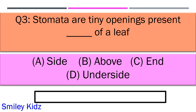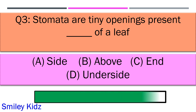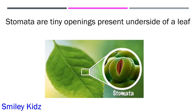Stomata are the tiny openings present on the dash of a leaf. Option A side, option B above, option C end, and option D underside. Your time starts now. And your time is up and the right answer is option D underside.